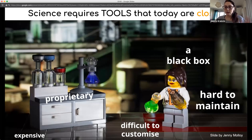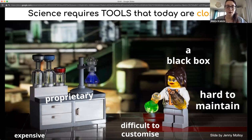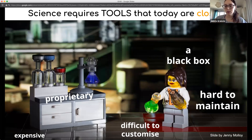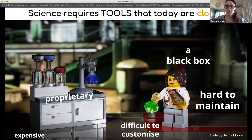Science demands tools — you can't produce data without them. Tools span a huge variety: analog, electronic, wet lab tools. We're not only talking about electronics when we discuss open hardware, but all tools used in the research process. Today, roughly 99% of scientific tools are closed, meaning the designs, blueprints, and how-to information are not available to anyone except the vendor — the equivalent of proprietary software.